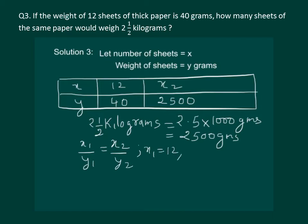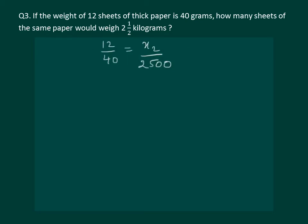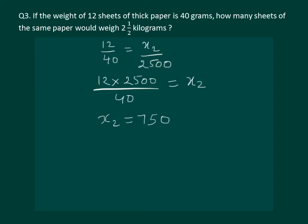Using the property of direct proportion, x1 by y1 should be equal to x2 by y2. Substituting x1 equal to 12, y1 equal to 40, x2 we have to find out, and y2 equal to 2500, we get 12 by 40 is equal to x2 by 2500. On cross multiplying, we get 12 into 2500 whole divided by 40, which gives us x2 equal to 750. Therefore the required number of sheets of paper which will weigh 2.5 kilograms is 750.